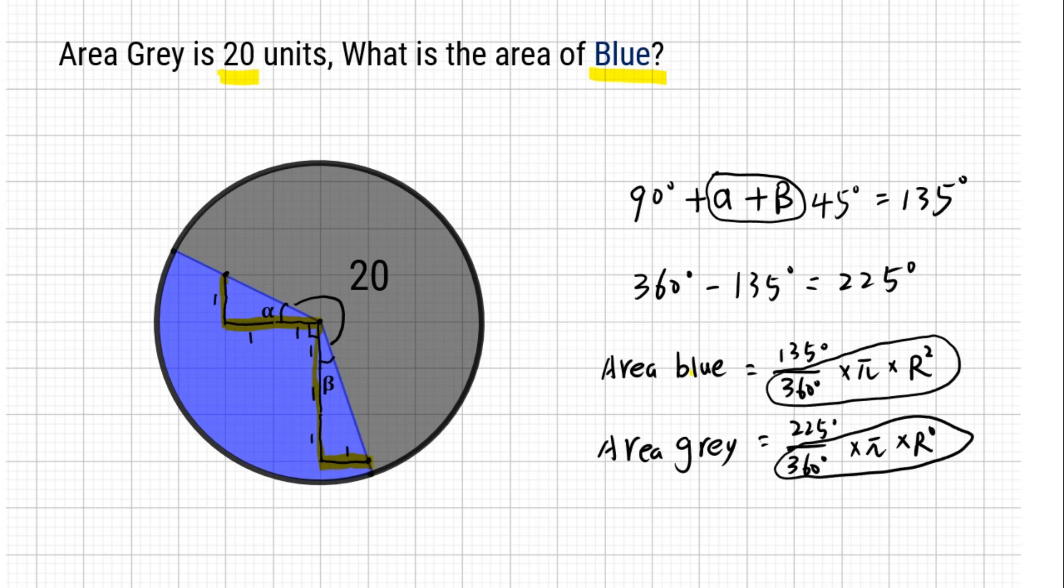Area blue over area gray is 135 over 225, which is 3 over 5.